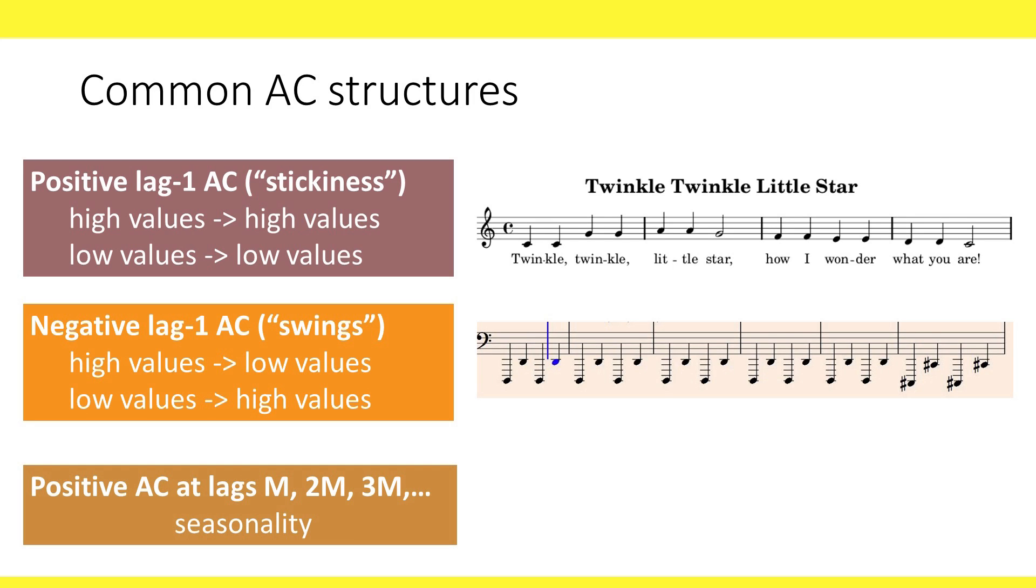A third pattern is spikes at multiples of some lag, similar to what we just saw in the Amtrak series, where we had spikes at lags 12, 24, 36, and so on. This indicates that the series contains seasonality, where values in the same season tend to be positively correlated.